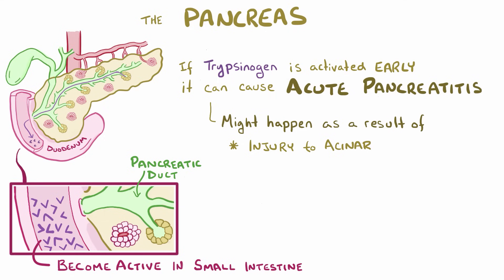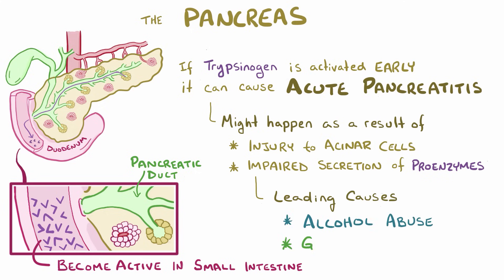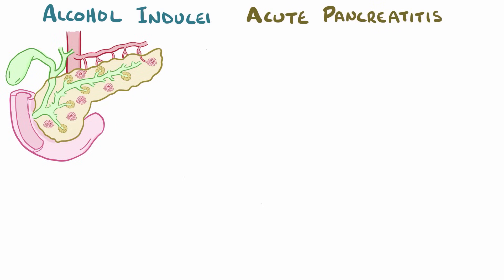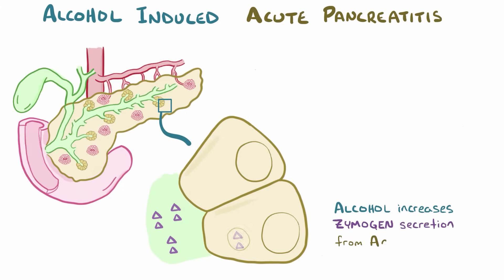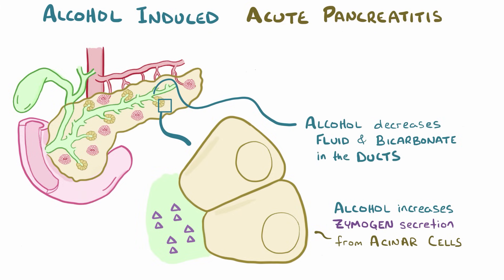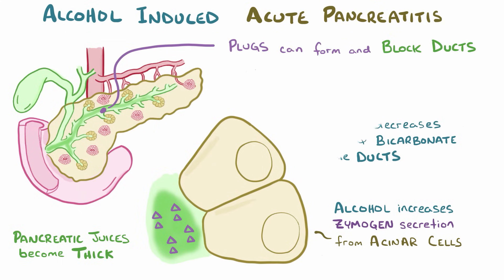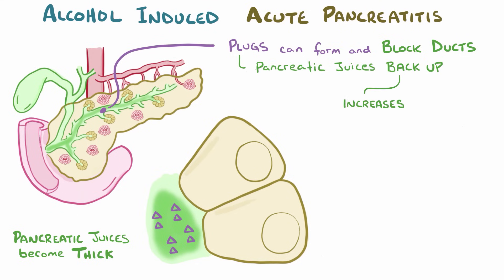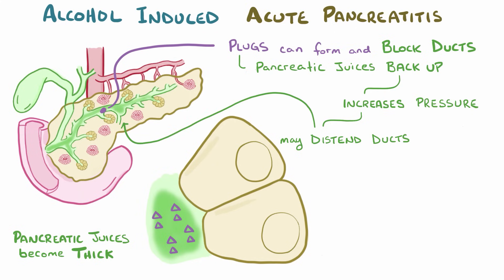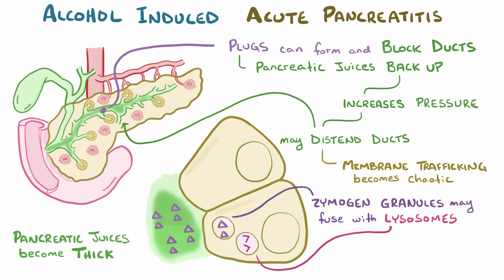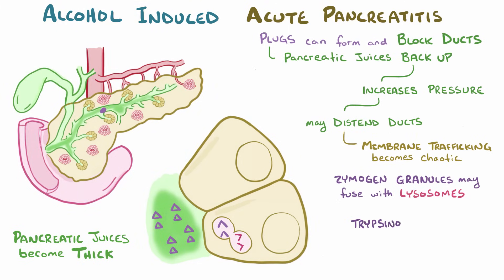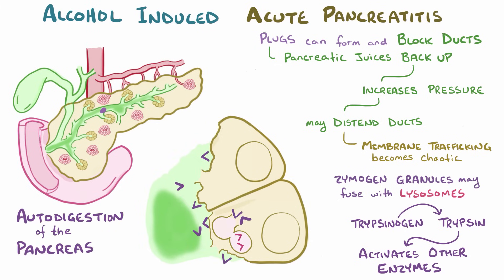This might happen as a result of any injury to the acinar cells, or anything that prevents the normal secretion of the proenzymes into the duodenum. The two leading causes of acute pancreatitis are alcohol abuse and gallstones. With alcohol abuse, alcohol increases zymogen secretion from acinar cells while decreasing fluid and bicarbonate production from the ductal epithelial cells. As a result, the pancreatic juices become really thick and viscous, potentially forming a plug that can block the duct. A blocked duct is bad news because pancreatic juices start backing up, increasing the pressure and leading to distention of the duct itself. At the cellular level, one consequence of this is that membrane trafficking becomes chaotic. Zymogen granules might fuse with lysosomes, which brings trypsinogen into contact with lysosomal digestive enzymes. Trypsinogen might then be turned into activated trypsin, which begins the cascade of digestive enzyme activation and autodigestion of the pancreas, which is acute pancreatitis.